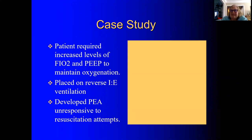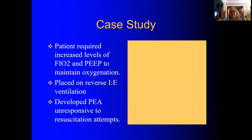She develops a rhythm called PEA — pulseless electrical activity, which we'll learn about in a couple of weeks. On the monitor we see some electrical activity, but she has no pulse. It doesn't matter whether I see a-fib, normal sinus rhythm, bradycardia, or tachycardia — it's pulseless. She's got no measurable cardiac output. She's unresponsive to resuscitation. Unfortunately, this patient passes away.